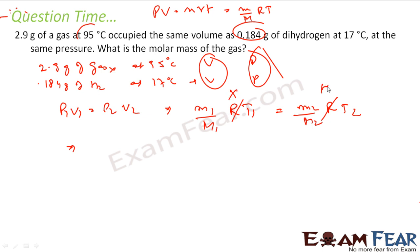So this is my gas x and this is my hydrogen. For gas x my mass was 2.9 gram. I have to find the molar mass of the gas, so M1 will come out to be M1 equals M1 times T1 by M2 times T2 times capital M2. M1 is 2.9 gram times T1, which is 95 degrees Celsius. You convert this: 95 plus 273, you get 368 Kelvin. By M2, mass of M2 is 0.184 gram.